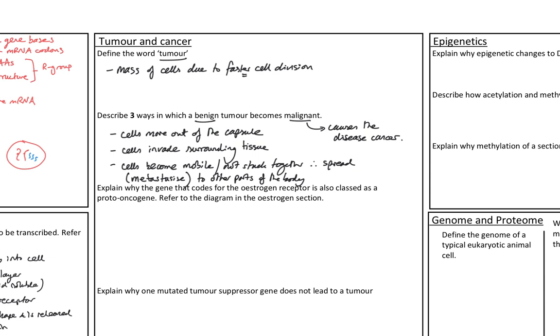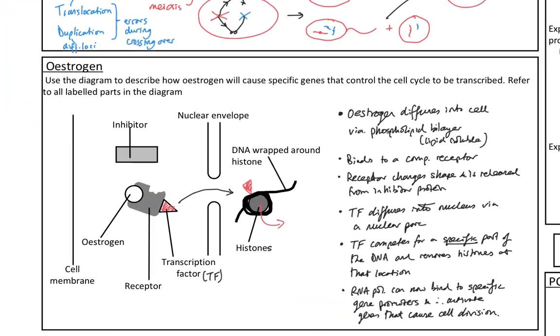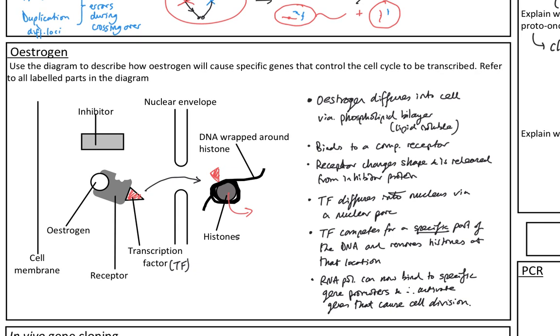Next, explain why the gene that codes for the estrogen receptor is also classed as a proto-oncogene. Refer to the diagram in the estrogen section. So a proto-oncogene is a class of genes that are linked to normal cell division. So the issue, when it binds to the receptor, in effect, an event is going to occur that's going to cause the cell to divide. So because of that, it's classed as a proto-oncogene. If it goes wrong, then it can become an oncogene. So if we look at this, so remember, before this happened, the receptor was bonded to the inhibitor. And when estrogen bonded, it changed the shape of the receptor.